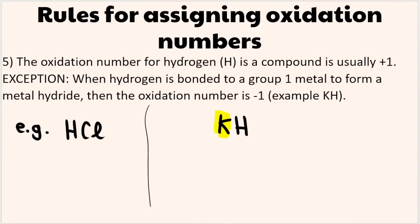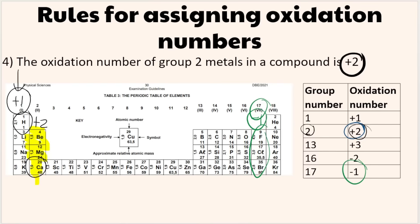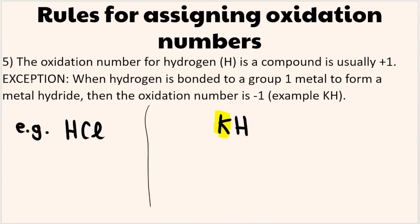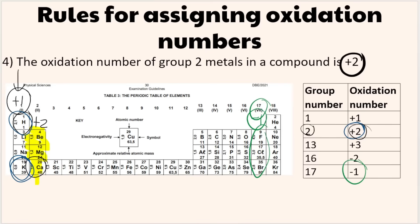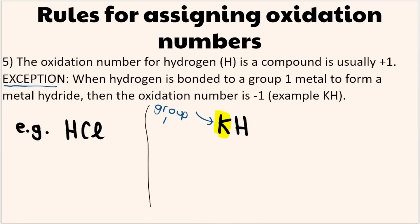Rule 5: hydrogen is usually +1, since it's in group 1. Exception: when hydrogen is bonded to a group 1 metal to form a metal hydride, like potassium hydride (KH), potassium takes +1 and the compound must equal 0, so hydrogen is -1 in that case. However, under all other circumstances hydrogen is +1. For example, in HCl, hydrogen is +1 and chlorine is therefore -1.